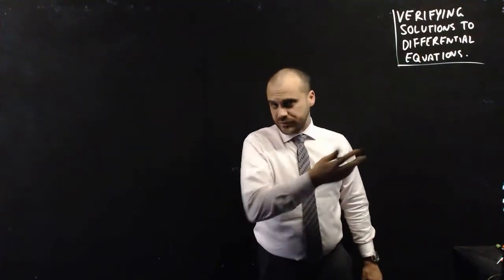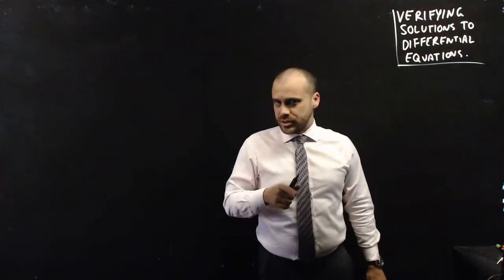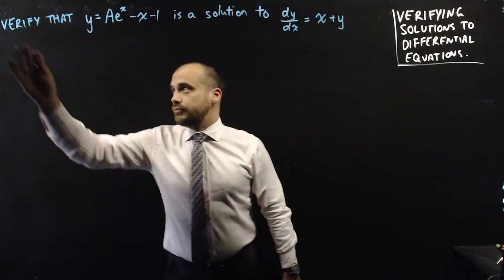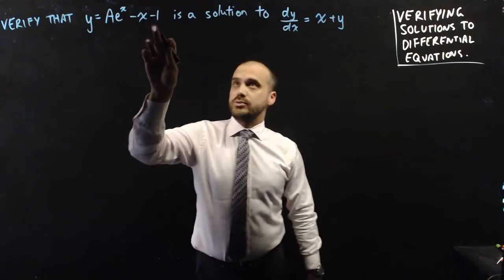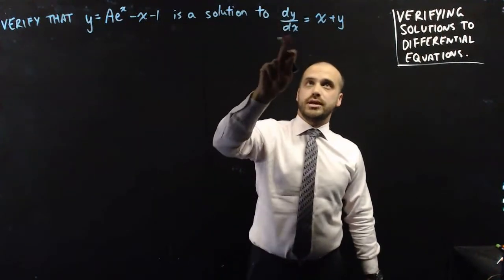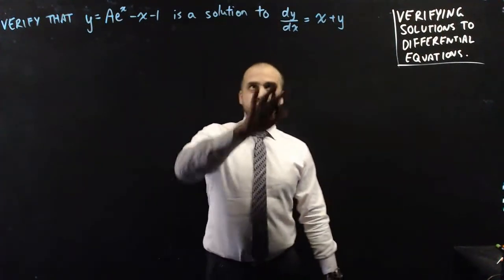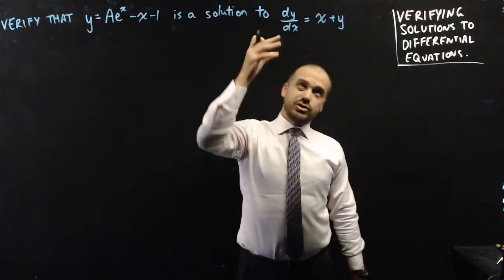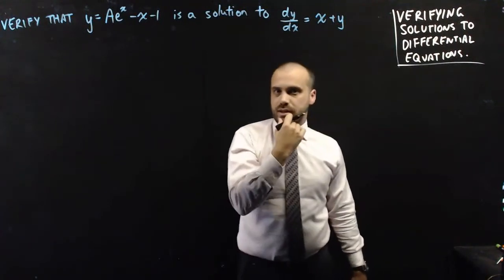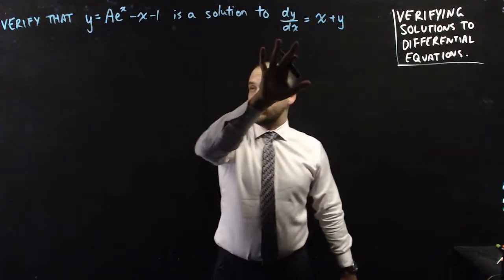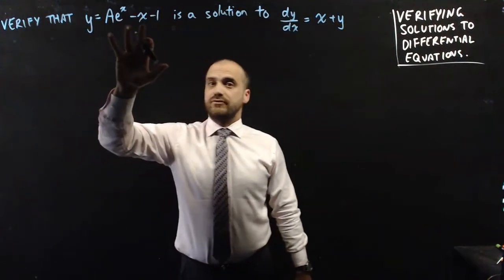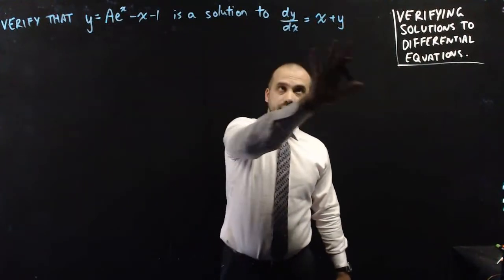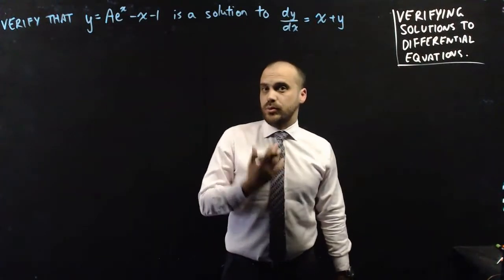Sometimes it's a bit hard to solve a differential equation, but if someone tells you the answer, you might be able to verify that it's true. So here's our example: verify that y equals ae to the x minus x minus 1 is a solution to dy/dx equals x plus y. If you wanted to find that solution you would integrate, but it's tricky because there's an x and a y in there. We can verify that this is in fact the solution by letting y equal this in the equation and seeing if it works.